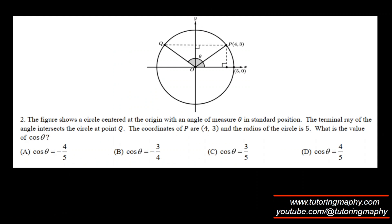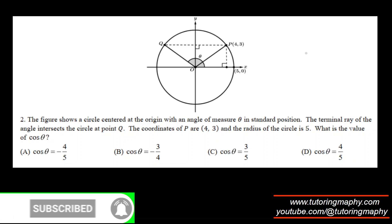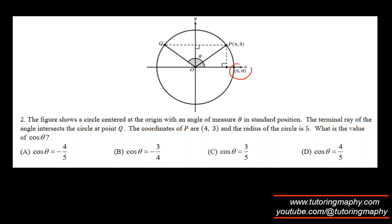Similarly, the coordinates of P are given and the radius of the circle is 5. What is the value of cosine of theta? Theta is measured in standard position for the terminal ray ending at Q. So this is the theta. Now, cosine of theta is adjacent over hypotenuse. The hypotenuse is basically the radius of the circle, which is 5. So it has to be something over 5.